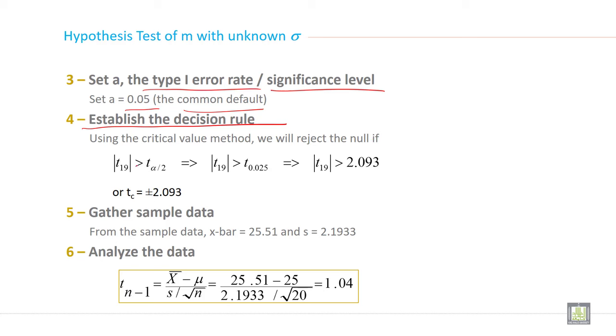If T19, and it is a two-tail test, the table critical value is equal to or greater than ±2.093. So if T calculated equals ±2.093 or greater, reject the null hypothesis. This is the decision rule.